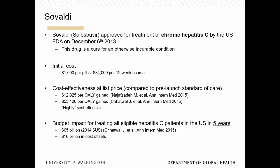The initial cost of Sovaldi was $84,000 for a 12-week course — essentially 84 pills at $1,000 a pill. Cost-effectiveness studies showed it was highly cost-effective in some jurisdictions, but the budget impact was severe. At that price, you would need billions of dollars to cover the population because it's a high-prevalence condition.